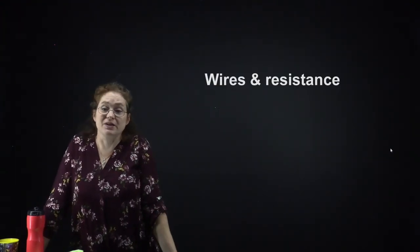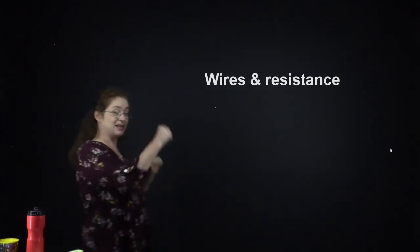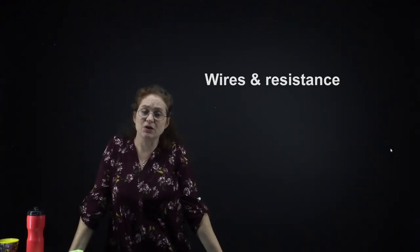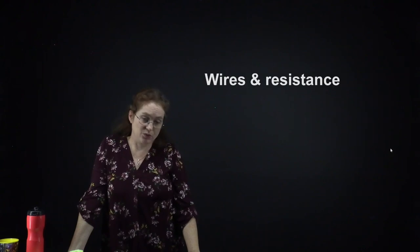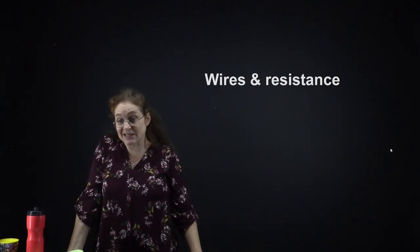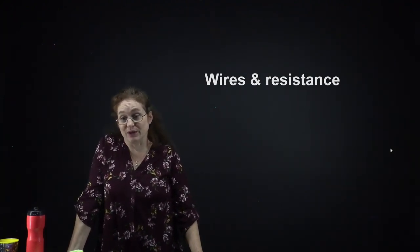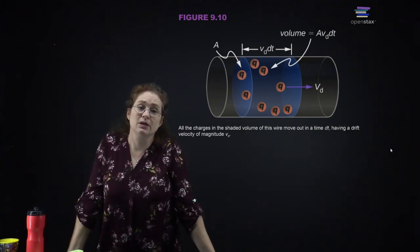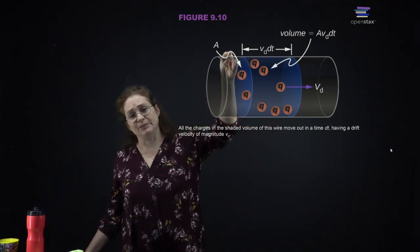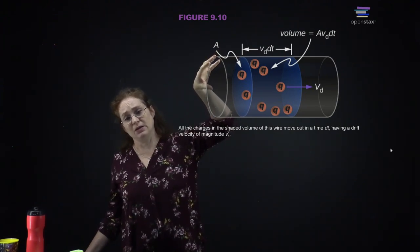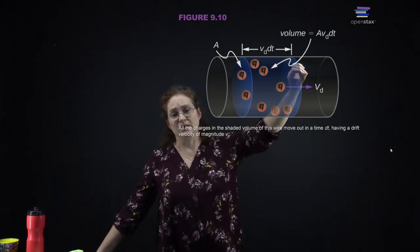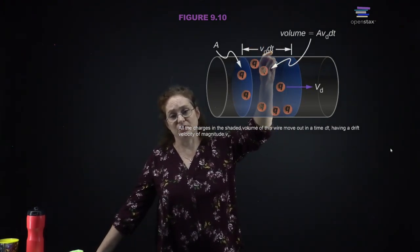As electrons travel through a conductor, they scatter off things and lose energy. We talk about the ability of a conductor to resist electric current flowing through it as resistance. Here you can see the cross-section of a wire with some drift velocity — charges moving through a certain volume in a given amount of time, which is the drift velocity times time.